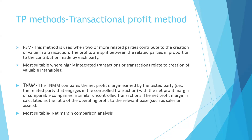The fifth method is the transactional net margin method — TNMM. TNMM compares the net profit margin earned by the tested party with the net profit margin of comparable companies in similar uncontrolled transactions. The net profit margin is calculated as the ratio of operating profit to a relevant base, which can be either sales, expenses, or assets.